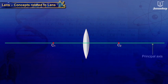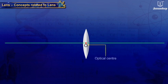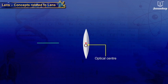The principal axis is an imaginary straight line passing through the two centers of curvature of the lens. The optical center is the center point of the lens on the principal axis. A ray of light passing through the optical center does not undergo deviation.